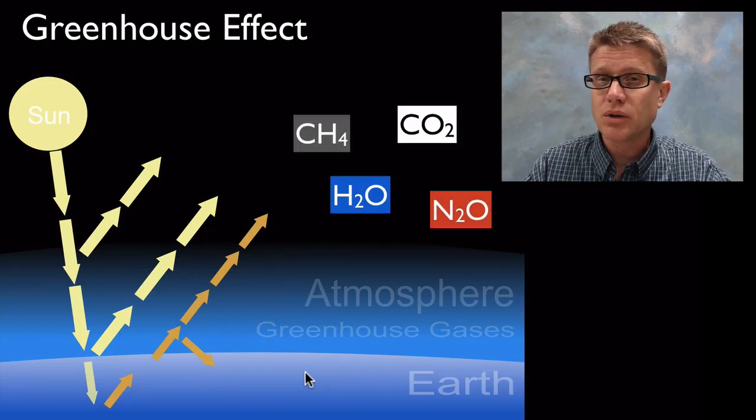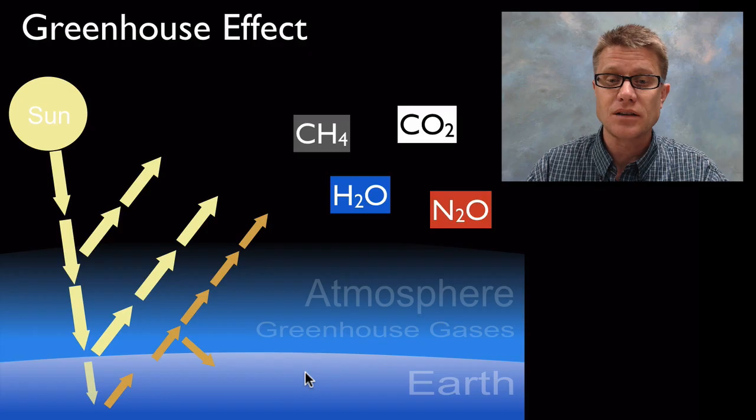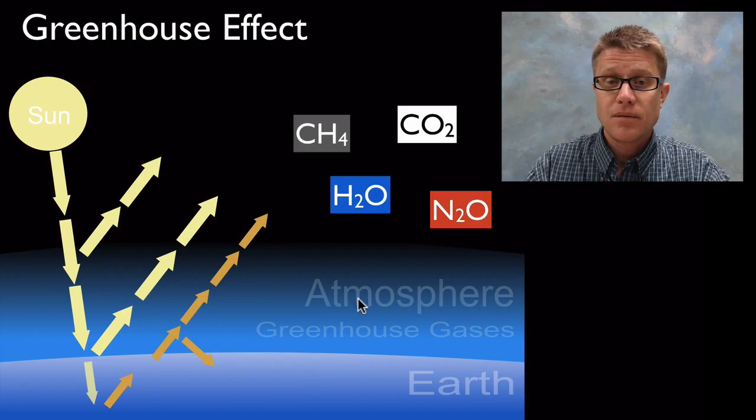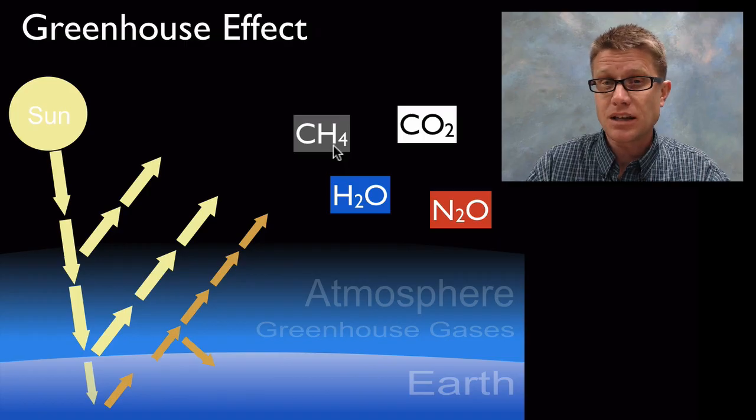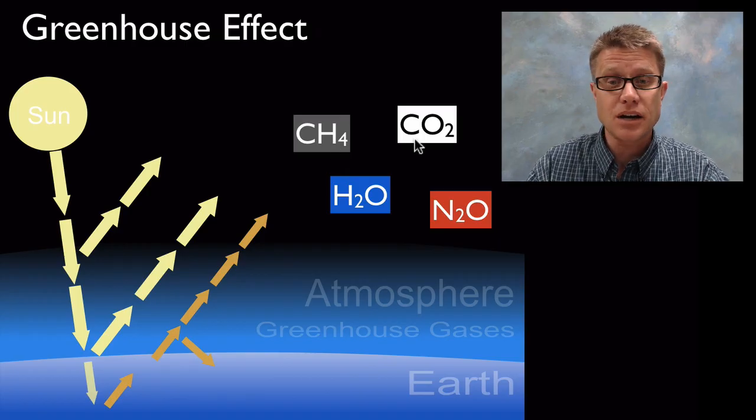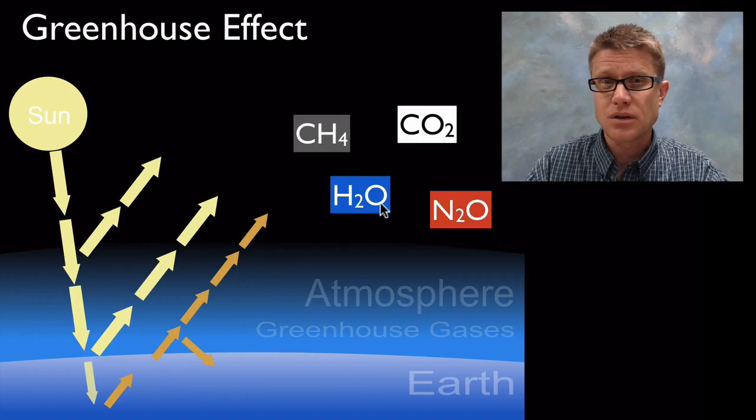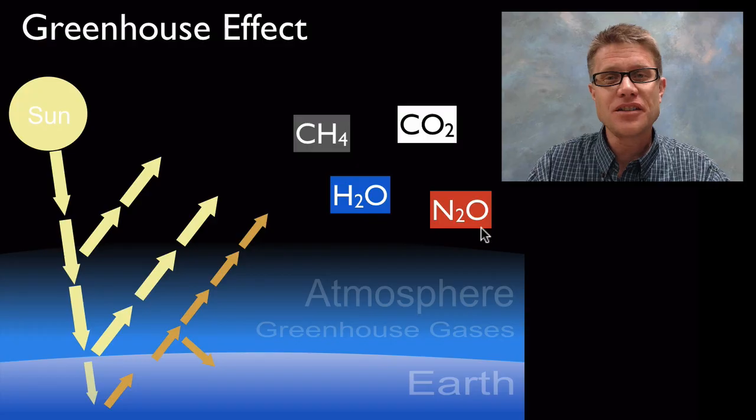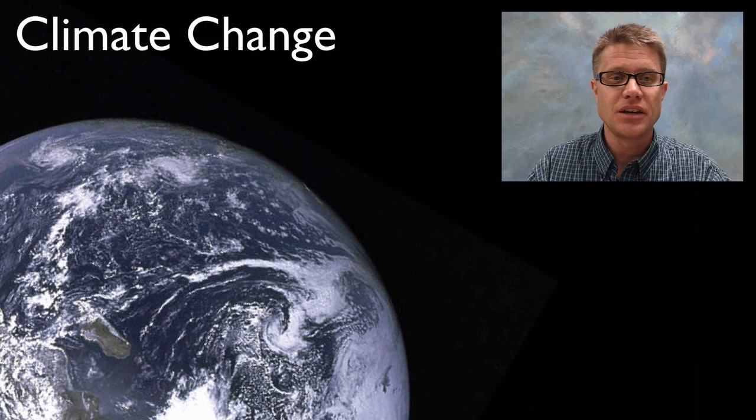We have what are called greenhouse gases, and those greenhouse gases in our atmosphere slow that loss of heat. The big four are methane (natural gas), carbon dioxide, water vapor (water in gaseous form), and nitrogen oxide. All of these act to hold that heat near our planet.